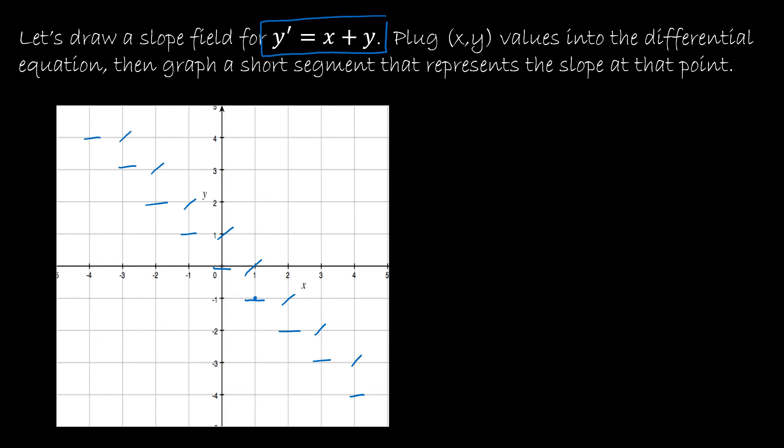If I took the point (-1, 0), that's right here. -1 plus 0 is -1, and a slope of -1 has a 45-degree angle in the opposite direction. Again, I can see that there would be a pattern.